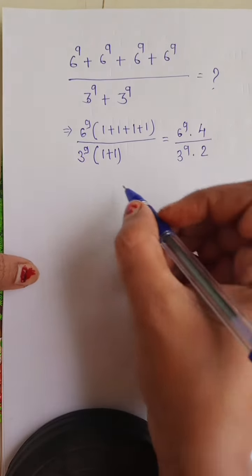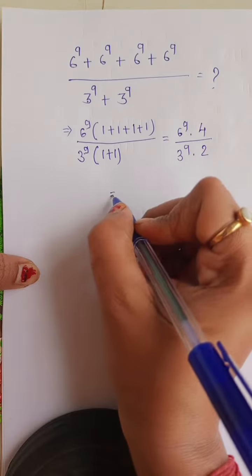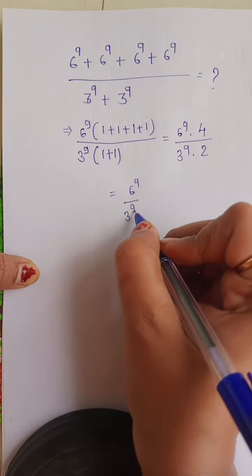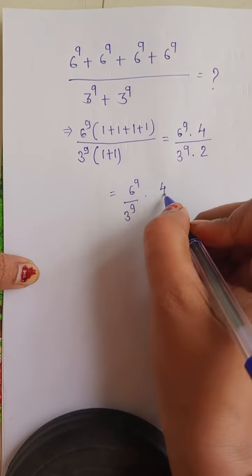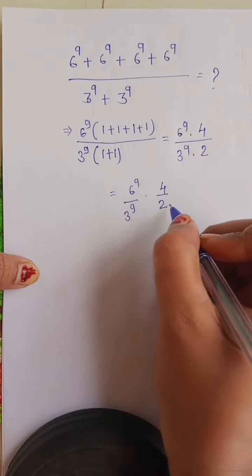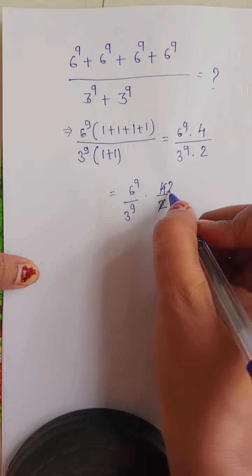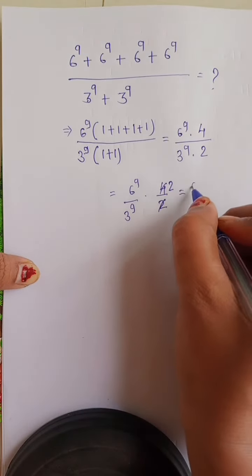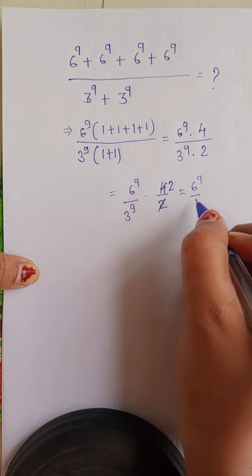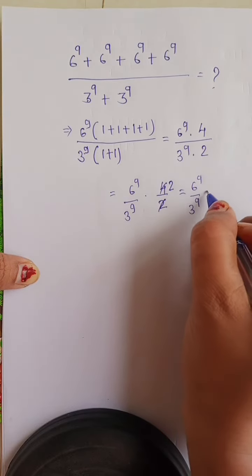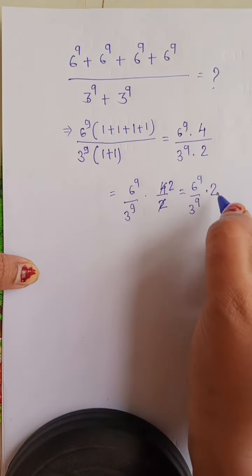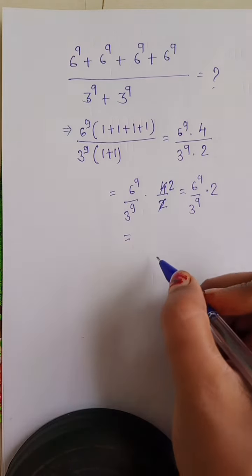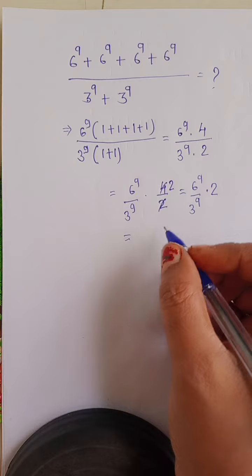Or we can write 6 power 9 divided by 3 power 9, into 4 by 2. Now 4 divided by 2 is equal to 2, so it is equal to 6 power 9 divided by 3 power 9, into 2. Clear. Now the power is the same here — both are 9.